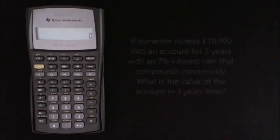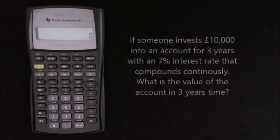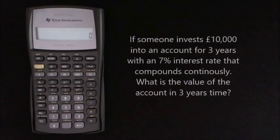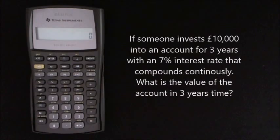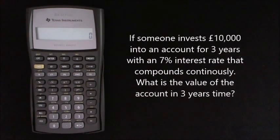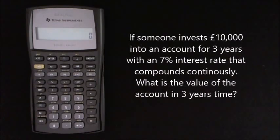So let's kick off with the number E first. We'll use a simple example to help us. If someone invests £10,000 into an account for three years with a 7% interest rate that compounds continuously, what is the value of the account in three years time?